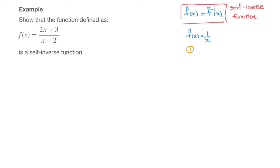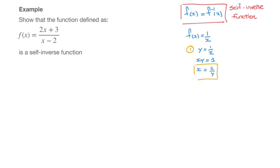Remember, the first step for finding a function's inverse is to start from y equals 1 over x, and to rearrange this to make x the subject. Since x is dividing this 1 on the right-hand side, I'll multiply both sides by x, which leads us to xy equals 1. Now I want to make x the subject, so I need to get rid of this y that's multiplying x. To do that, I divide both sides by y, and that leads us to x equals 1 over y. We've just made x the subject.